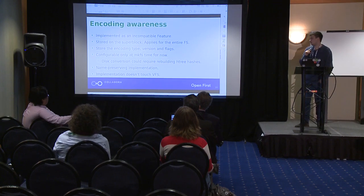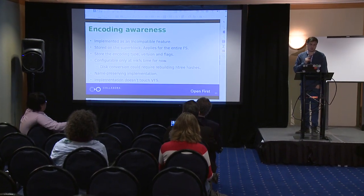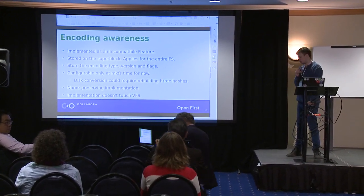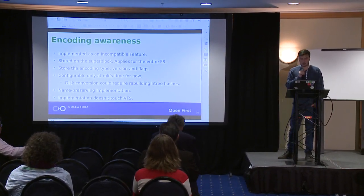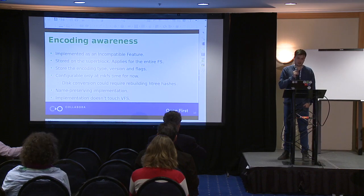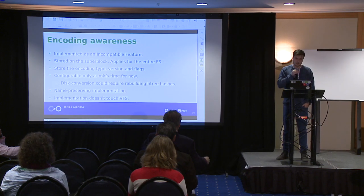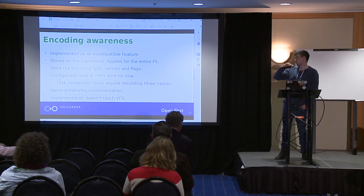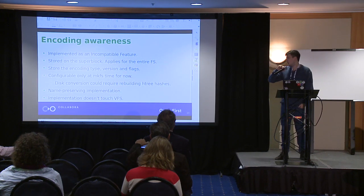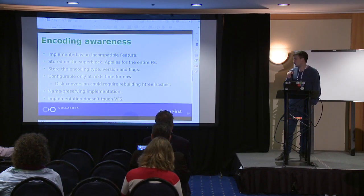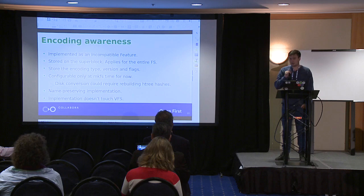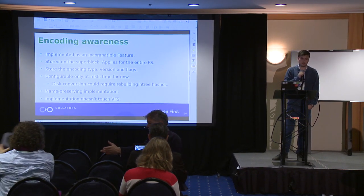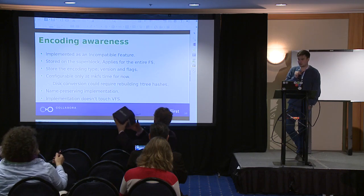This is implemented as an incompatible feature because we have to change hashes on disk, so once your disk goes encoding-aware it cannot go encoding-unaware in an online fashion. What I'm proposing now is to do this at file system creation time and apply it disk-wide. We store the encoding information and flags in the superblock and keep them there.